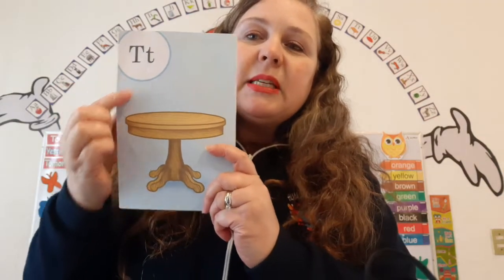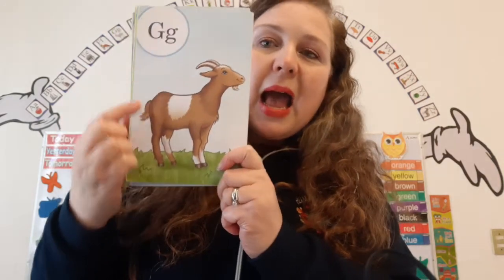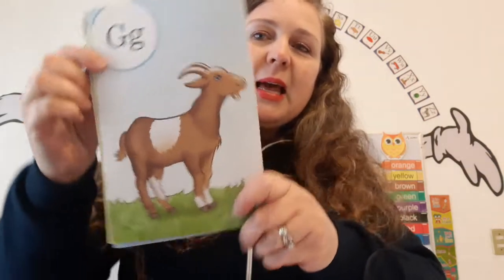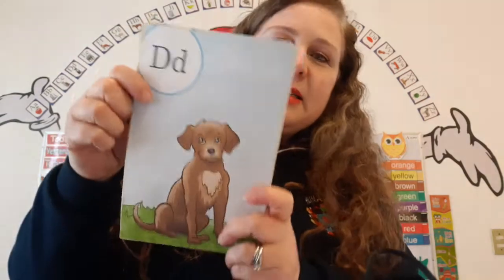Now, stop, look, and listen. Here are some consonants. The name of this letter is T. It makes a sound T as in table. T says T, T, T. The name of this letter is G. It makes a sound G as in goat. G says G, G, G. The name of this letter is D. It makes a sound D as in dog. D says D, D, D. The name of this letter is N. It makes a sound N as in nest. N says N, N, N. Super duper!